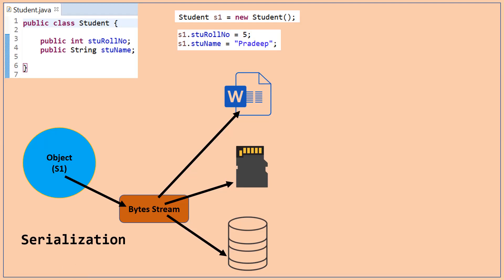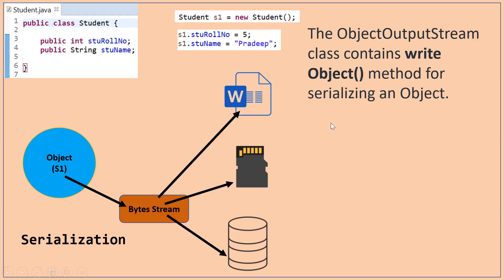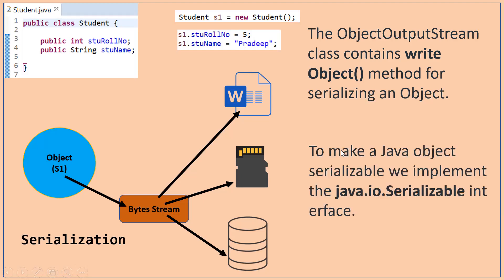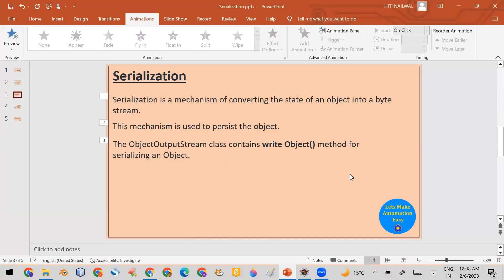Now how can we achieve serialization — how can we convert the object into the byte stream? For that purpose there is a class called ObjectOutputStream, and this class contains a method called writeObject. Using the writeObject method you can convert the object into the byte stream. There is one more condition: you cannot serialize any object of any class unless that class implements the Serializable interface. So you write: public class Student implements Serializable.